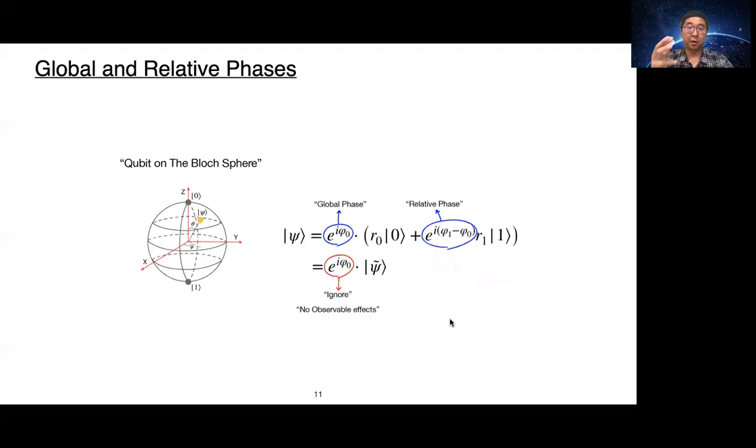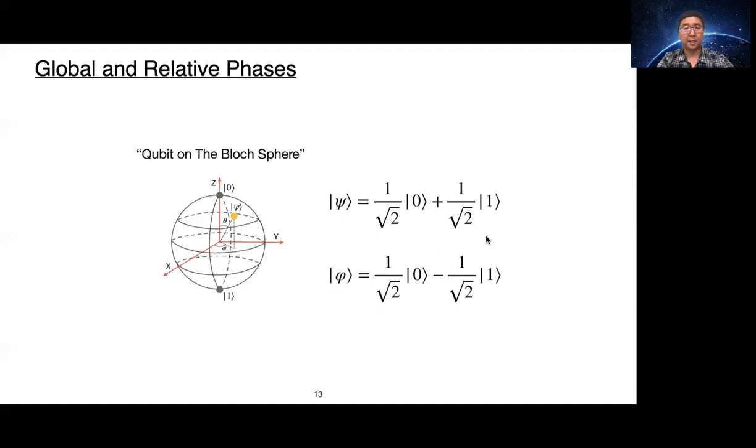So in general we can ignore global phase in a qubit. But how about this relative phase? Does it give physically observable differences? Let's discuss the question with this example.